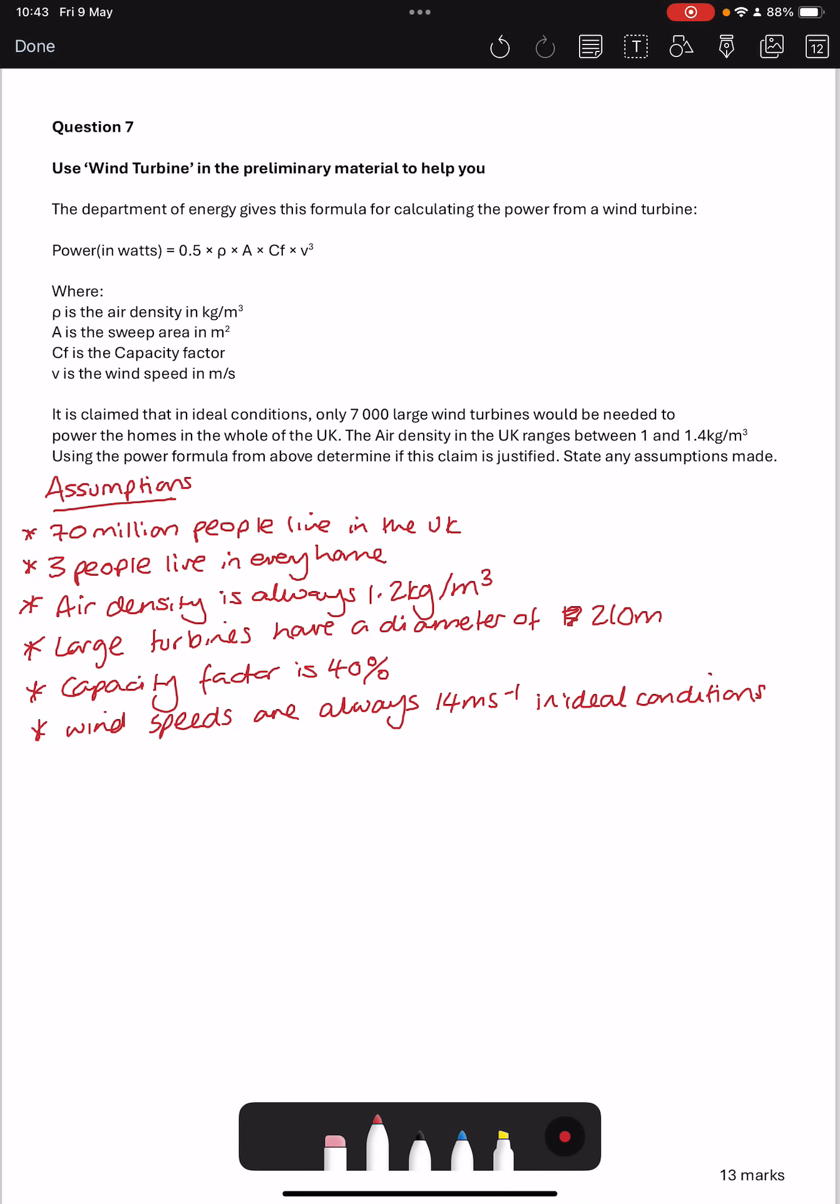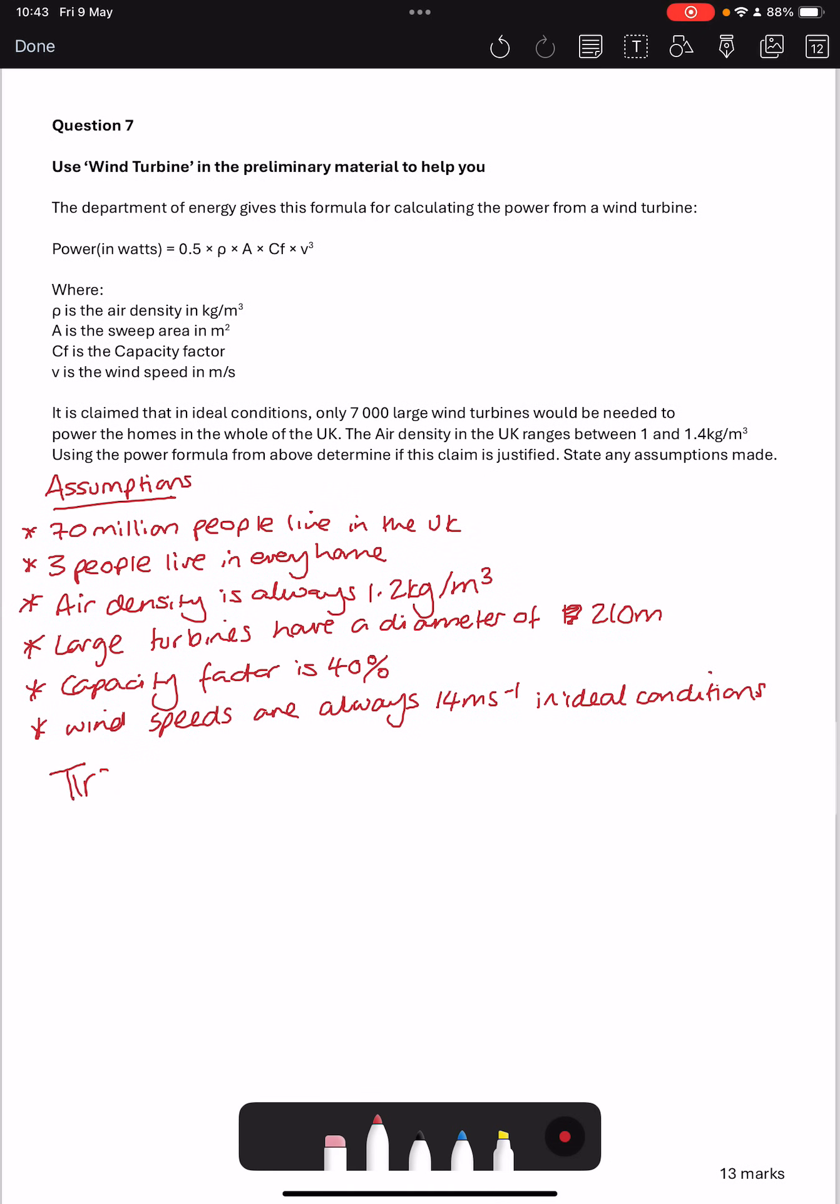Now because I'm using the sweep area, that means when these rotors from the wind turbines are turning round, the area that they cover, so I'm looking at the area of the circle. So pi r squared. I was using a diameter of 210, so my r is going to be 105. So 105 squared times by pi, which will be 11,025 pi meters squared.